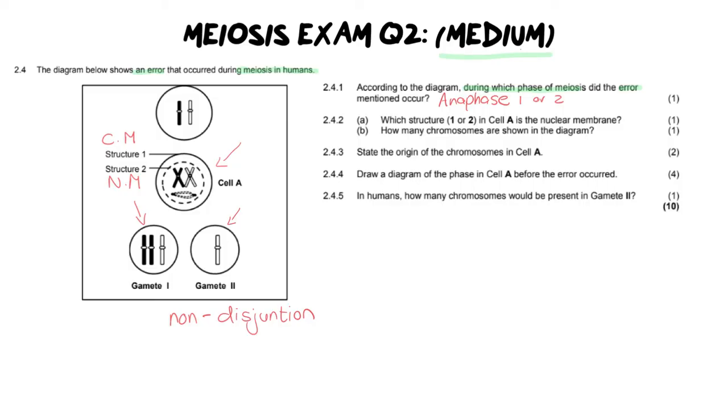Moving on to number two, it's asking us which structure 1 or 2 in cell A is the nuclear membrane, which luckily for us, we've actually already identified it over there which is going to be structure two. Then it says how many chromosomes are shown in the diagram. Now this question at first can be a little bit ambiguous because what do they mean by in the diagram, like which diagram? I just want you to know that the fact that they mentioned cell A at the beginning here means that we're still referencing that same cell. So how many chromosomes are in that picture? Well there's one over here and two over there, so we've got two.